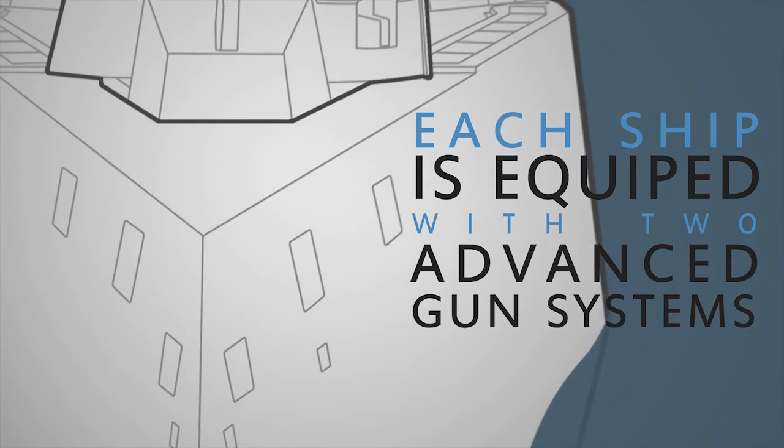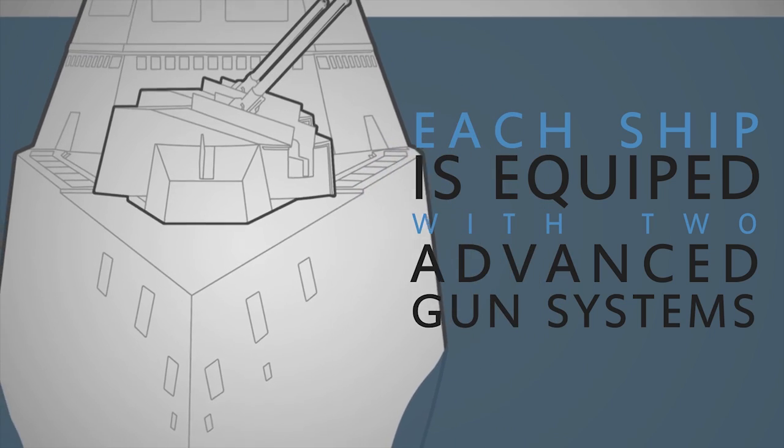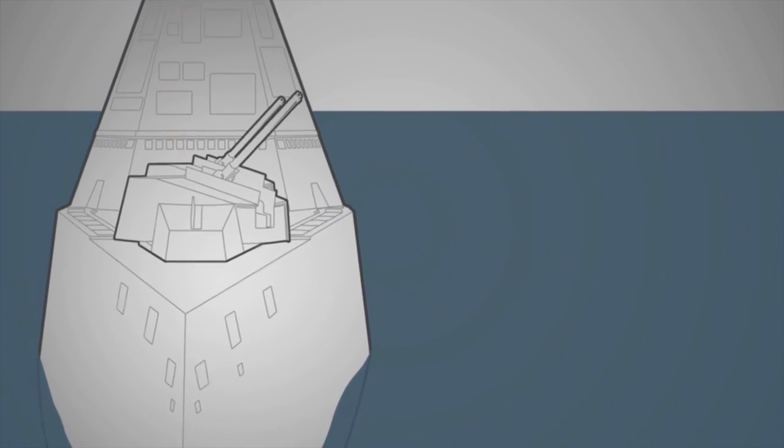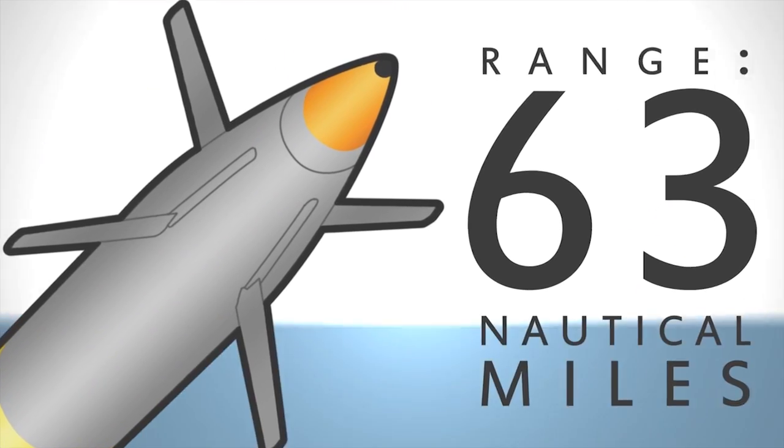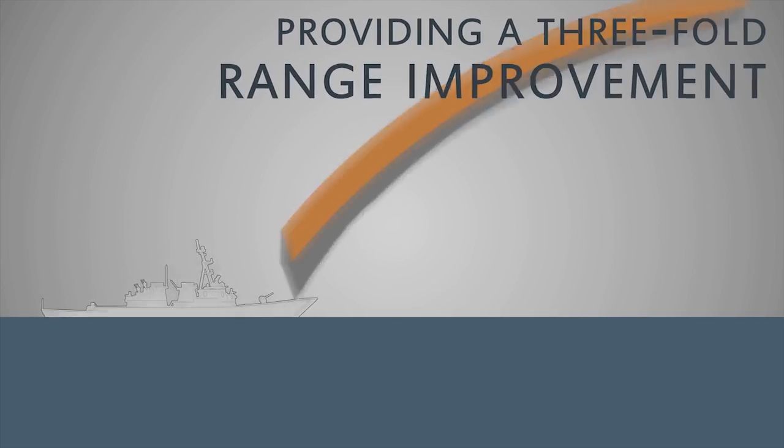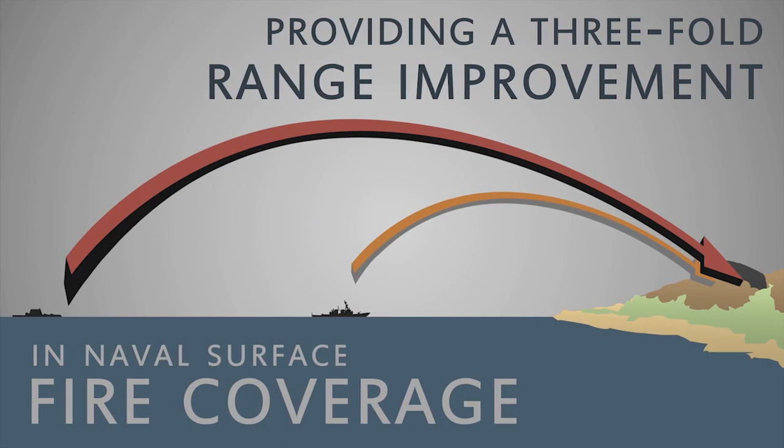Each ship is equipped with two advanced gun systems, firing a long-range land attack projectile with a range of 63 nautical miles, which provides a three-fold range improvement in naval surface fire coverage.